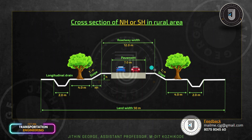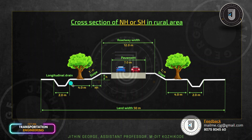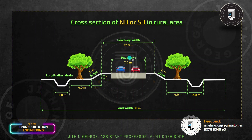The shoulder width is about 2.5 meters. The slope is 1 in N; the embankment slope is here. The height is given, and the horizontal distance is N into H. The formation width is about 53 meters. The median is about 4 meters, the dam is about 2 meters, and the pavement is 7 meters.